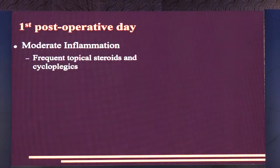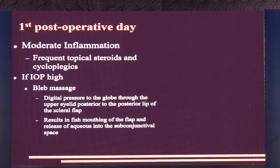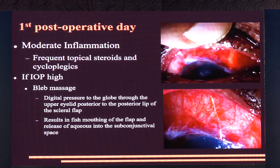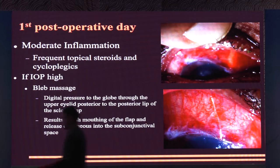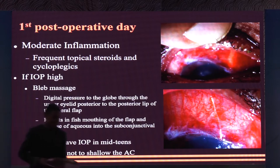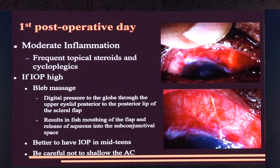The first post-op day usually has moderate inflammation; give frequent topical steroids and cycloplegics. If IOP is high, a gentle massage at the center of the cornea or apex of the bleb results in fish-mouthing and release of aqueous into the subconjunctival space. It's actually good to have slightly higher pressure, maybe in the early 20s on day one, rather than hypotony, as those tend to do better. Be careful not to drop IOP below the mid-teens and not to shallow the AC — be very gentle.